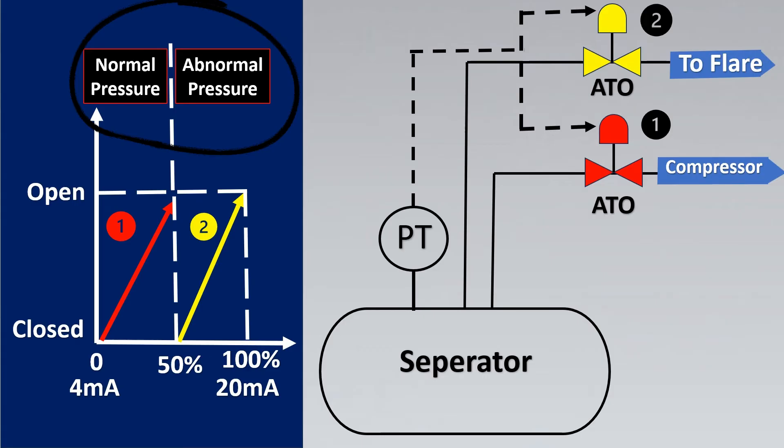So here valve number 1 is sized for normal conditions. Valve 2 will be a larger valve which will be sized for abnormal conditions. This is the second configuration of split range controller of how it works.